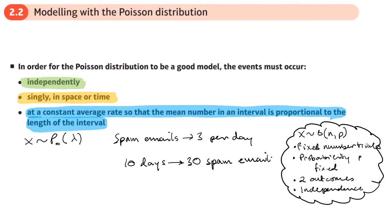You would also expect that maybe in half a day you would expect one and a half spam emails, if there is such a thing as half an email. But you get the point, you can multiply up, you can scale up and scale down.